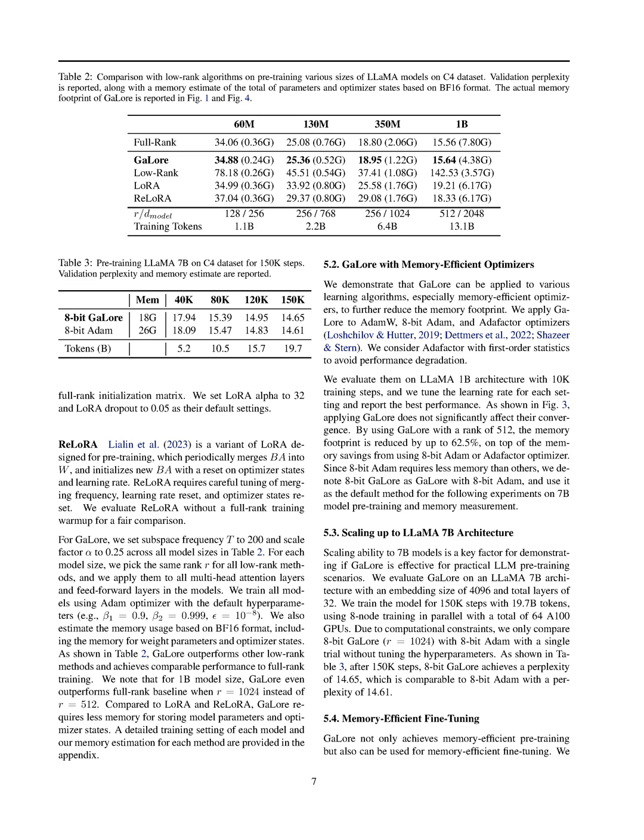Section Summary. In this section, we compare GaLore with existing low-rank methods using the Adam optimizer across various model sizes. GaLore outperforms other low-rank methods and achieves comparable performance to full-rank training, requiring less memory for storing model parameters and optimizer states. Additionally, GaLore can be applied to memory-efficient optimizers, reducing the memory footprint significantly without affecting convergence, making it suitable for both pre-training and fine-tuning tasks in large language models.